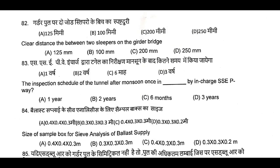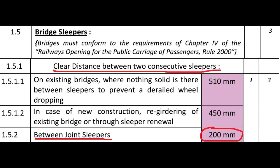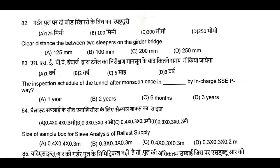Question Number 82: Clear distance between 2 sleepers on Gardar Bridge — on Gardar Bridge, 200 mm between 2 sleepers end to end. Question Number 82, C is the correct answer: 200 mm.